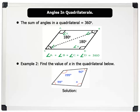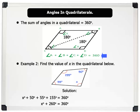Let us solve the problem. Example two: find the value of x in the quadrilateral below. Solution: remember that the sum of angles in a quadrilateral equals 360 degrees. So x plus 50 plus 55 plus 155 equals 360. This gives x plus 260 equals 360, therefore x equals 360 minus 260, so x equals 100 degrees. That's wonderful!